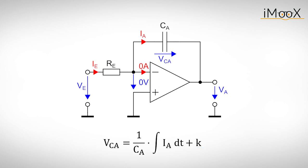If we just powered our circuit, the capacitor isn't charged and K is zero volts. We substitute the current IA with IE, which in turn is VE divided by RE. The output voltage is again minus VCA and can be written as minus 1 divided by RE times CA multiplied by the integral of VE over DT.